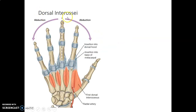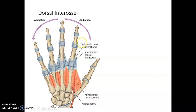The dorsal interossei — remember DAB: Dorsal interossei ABduct. These are the interossei on the dorsal aspect, seen in between the metacarpals, and they cause abduction of the digits.